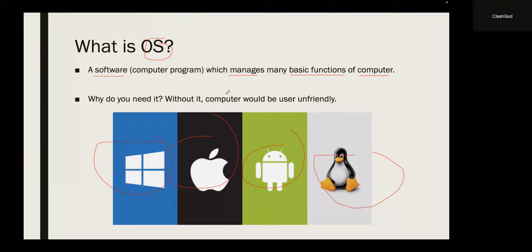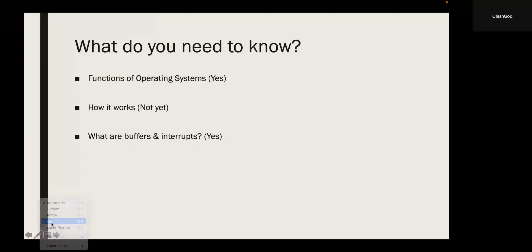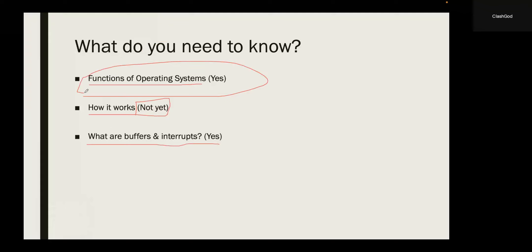If you don't have an operating system, the computer will not be easy to use. You will see why later on when we talk about some of the functions of operating systems. Now, for this chapter, you need to know about some of the functions of operating systems — not all of them, just the important ones. You don't need to understand how operating systems provide these functions. And lastly, you will learn about buffers and interrupts in the next video. Today we're going to look at four major functions of operating systems.